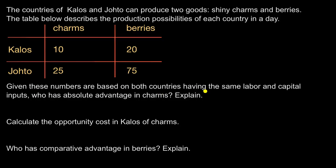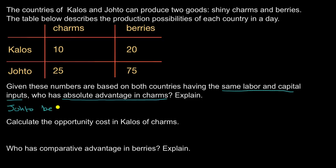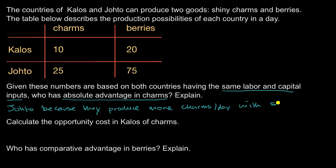Given these numbers are based on both countries having the same labor and capital inputs, who has the absolute advantage in charms? Absolute advantage is just who is more efficient — who, given the same inputs, can produce more. Both countries have the same inputs, so this is really just a question of who can produce more charms in a day. Johto can produce more charms per day with the same inputs, so they are more efficient and have the absolute advantage.